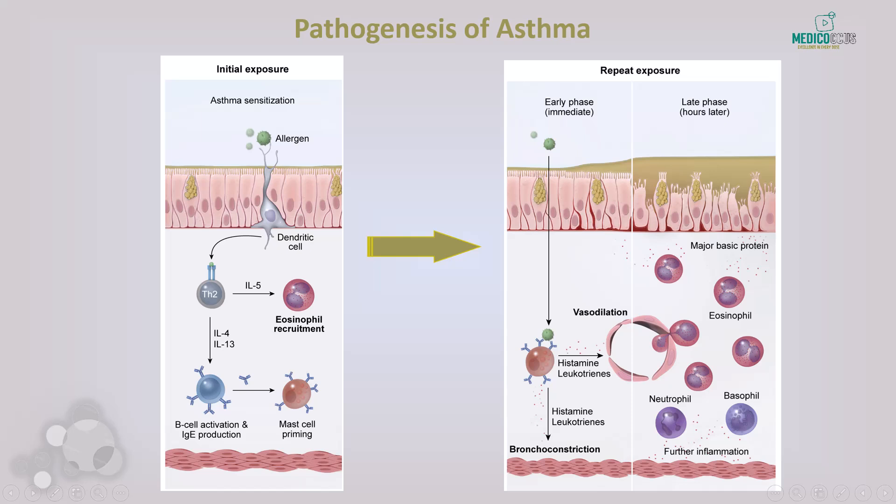Moving to the early phase immediate reaction in the middle panel — on repeat exposure, the allergen interacts with IgE on the surface of mast cells, causing them to degranulate. This releases inflammatory mediators like histamine and leukotrienes, triggering bronchoconstriction — a hallmark of an acute asthma attack — leading to shortness of breath, wheezing, and chest tightness. These mediators also cause vasodilation, furthering inflammation in the airways.